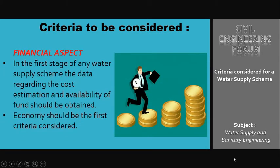The first criteria is the financial aspect. In the first stage of any water supply scheme, the data regarding cost estimation and availability of funds should be obtained, and economy should be the first criteria considered. The water supply scheme should then be planned in relation to the funds available, and the attempt should be made to make the scheme as economical as possible.